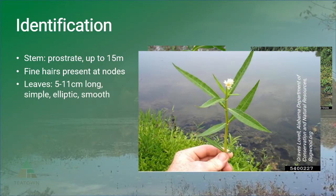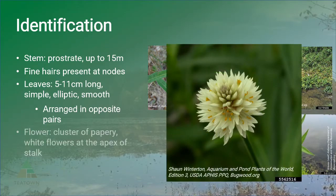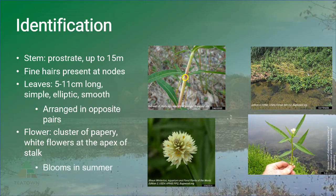Leaves are 5 to 11 centimeters long, simple, and elliptic with smooth margins and a prominent mid-vein. They are arranged in opposite pairs, with each pair of leaves perpendicular to the pair on either side of it. The flower is actually a cluster of small papery white flowers, similar to that of a clover flower, and is located at the tip of a 5 to 6 centimeter stalk. As this species is easily confused with other semi-floating plants, it is best to wait until the flower is in bloom to definitively identify it.